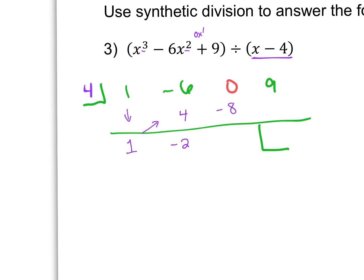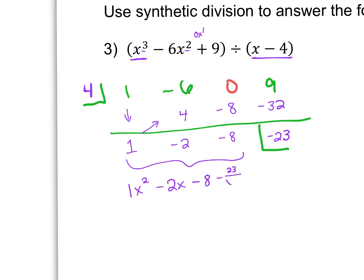Negative 6 plus 4 gives us negative 2. Negative 2 times 4 gives negative 8. Add again: 0 plus negative 8 gives negative 8. Negative 8 times 4 gives negative 32. Add 9 and negative 32 to get negative 23. So the reduced or depressed polynomial: we reduce the degree by 1 from x cubed, giving us 1x squared minus 2x minus 8. The number in the box is always your remainder, so in this case we have minus 23 over x minus 4.